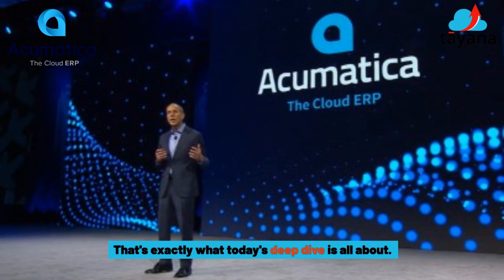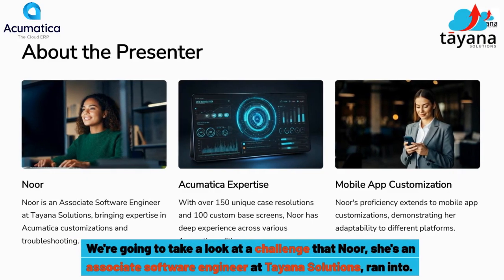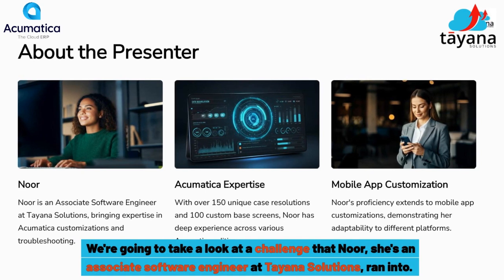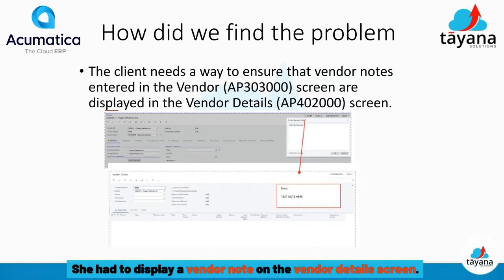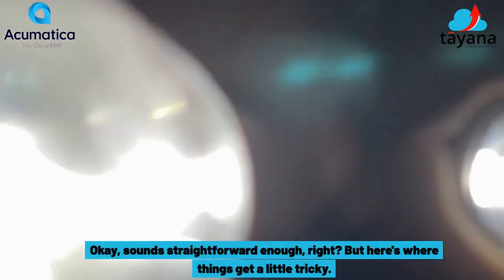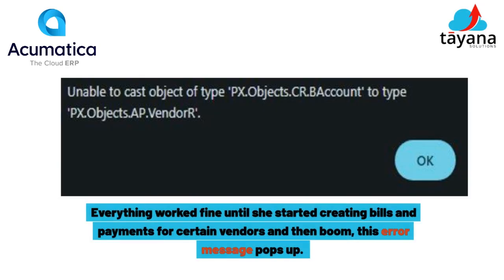That's exactly what today's deep dive is all about. We're going to take a look at a challenge that Noor — she's an associate software engineer at Diana Solutions — ran into. She had to display a vendor note on the vendor details screen. Sounds straightforward enough, but here's where things get a little tricky. Everything works fine until she started creating bills and payments for certain vendors, and then boom, this error message pops up.